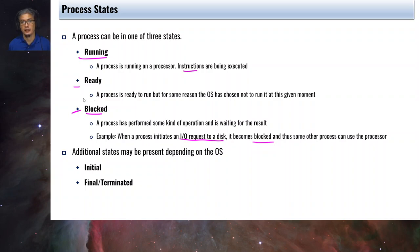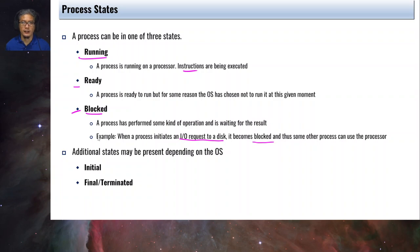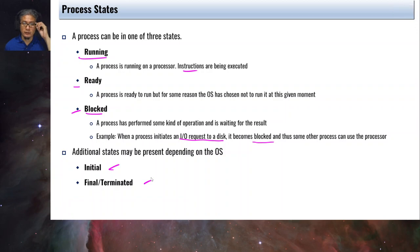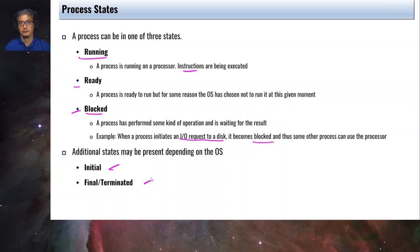There are additional states that may be present in the OS depending on the OS designer. I'll show you the process states in Linux later. A sample would be the initial state or the final/terminated state. Earlier I showed you the 't' state of the running process because it was running in the debugger — that's one possible state in the Linux process state model.